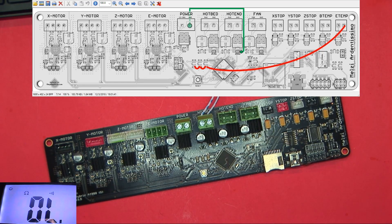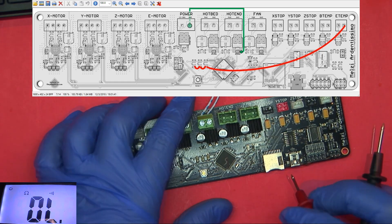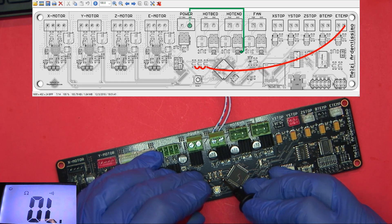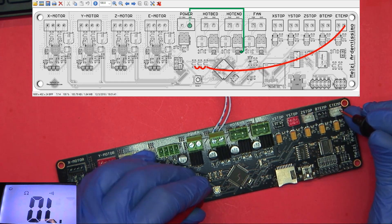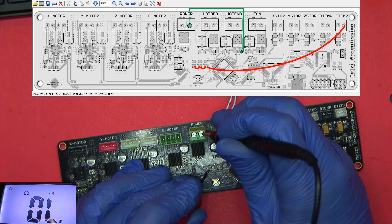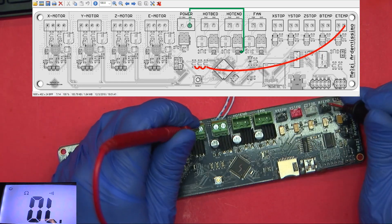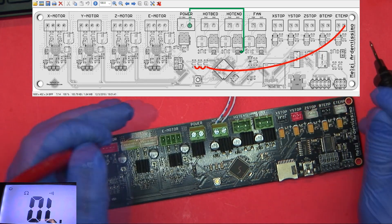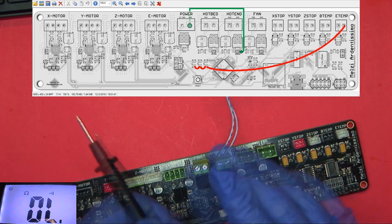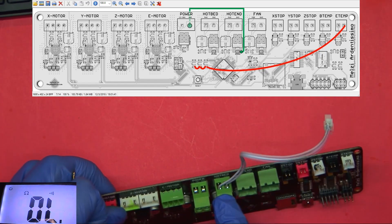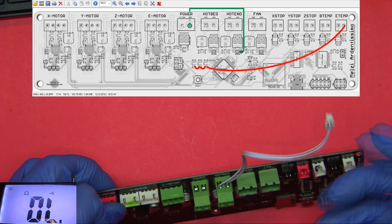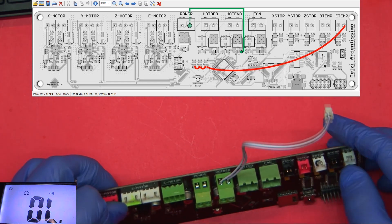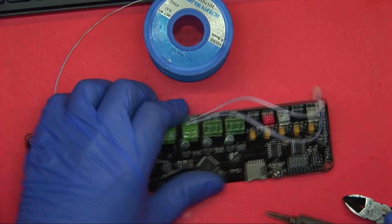So before I do anything, I want to test to make sure these are actual ground points on this board before I go shorting something out. So if we see these are all connected and it connects to ground, and all these here connect to ground. So we're good. I'm not, like I said, I'm not going to do the hotbed because there's no point to do that, at least in my case, because I have an external MOSFET. You can do an external MOSFET for the hotend as well. I just don't have that. So now we go in for the kill.